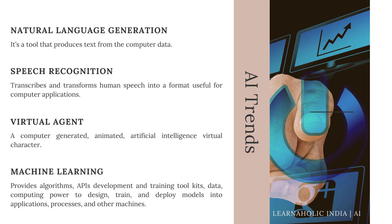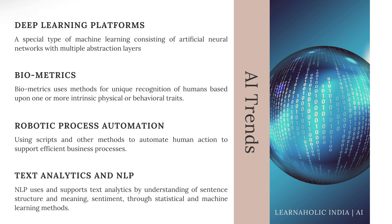The next technology is Machine Learning. It provides algorithms, APIs, training toolkits, data, and computing power to design, train, and deploy models into applications, processes, and other machines. The next is Deep Learning Platform, a special type of machine learning consisting of artificial neural networks with multiple abstraction layers. It is currently used in pattern recognition and classification applications supported by very large datasets.